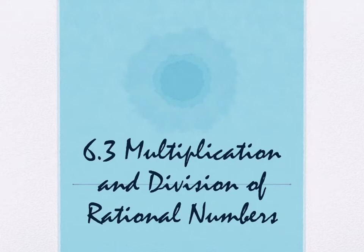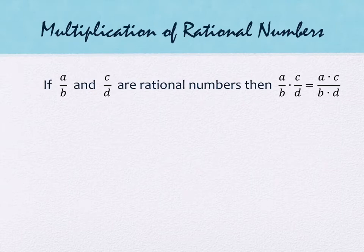First, a definition of multiplication. If we have a over b times c over d, we simply multiply across the top and multiply across the bottom.